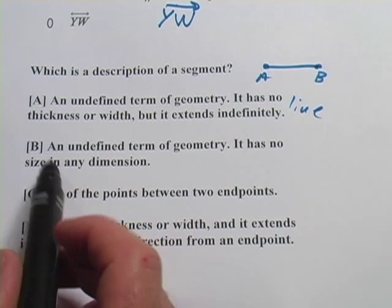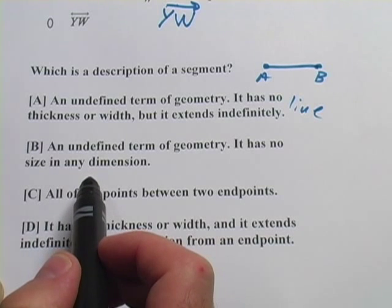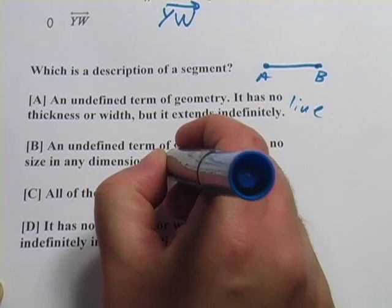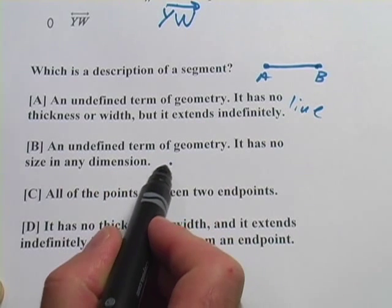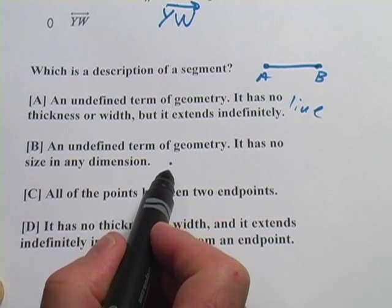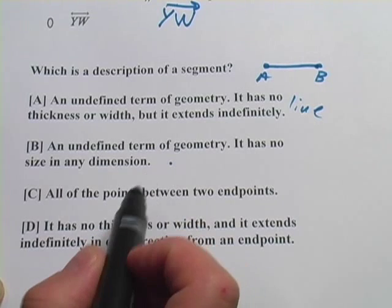Let's look at the next one. An undefined term of geometry, it has no size in any dimension. That sounds pretty weird, but that's what they actually call a point. A point points to a single spot in space, but technically it has no length, no width, no depth. It's just a point.